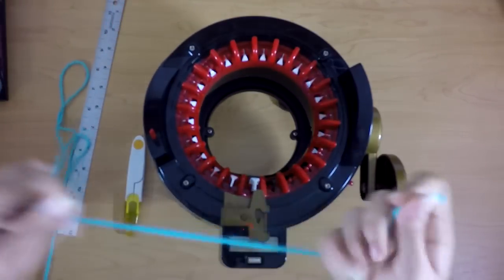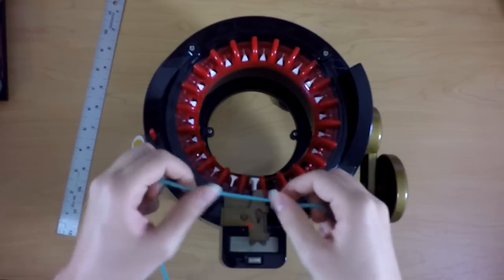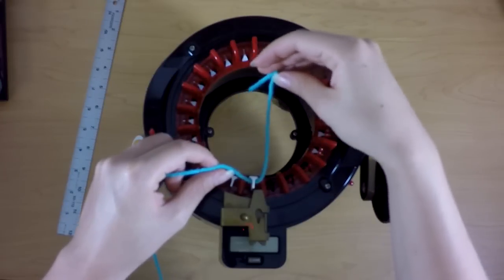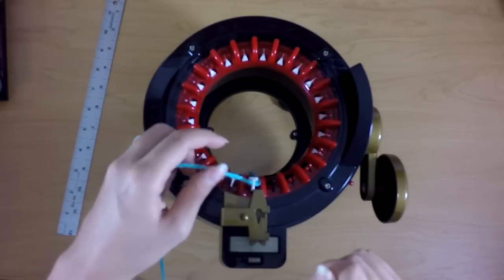So I'm going to take the end of my yarn. I'm going to leave about six inches or so. And I'm going to hook that yarn into that first white needle. And I'm going to let the tail drop because I don't need that.